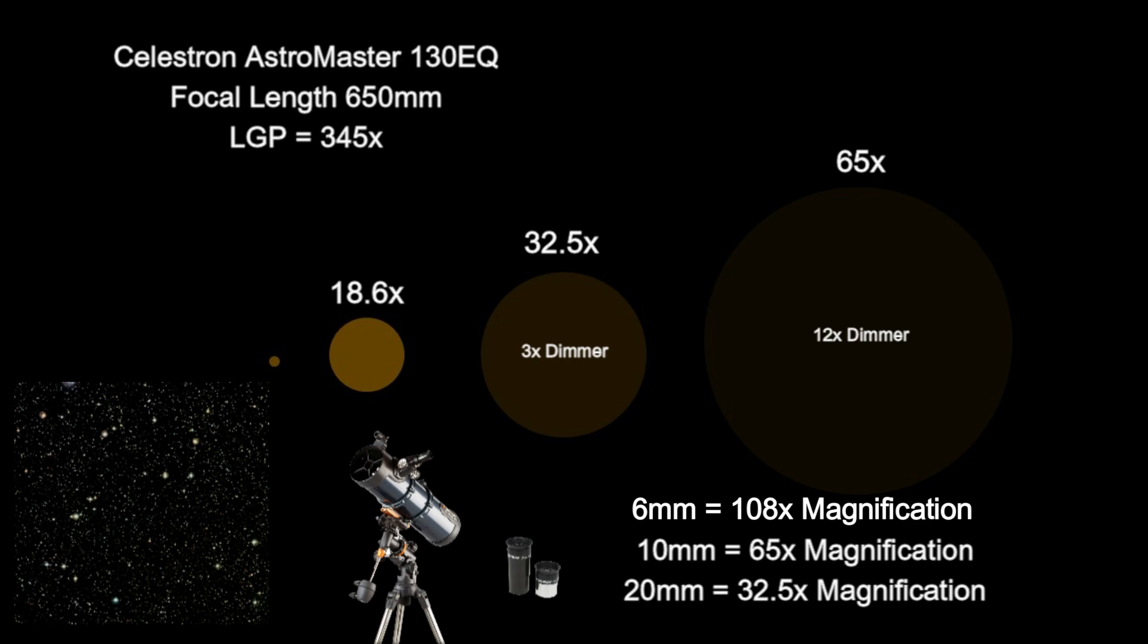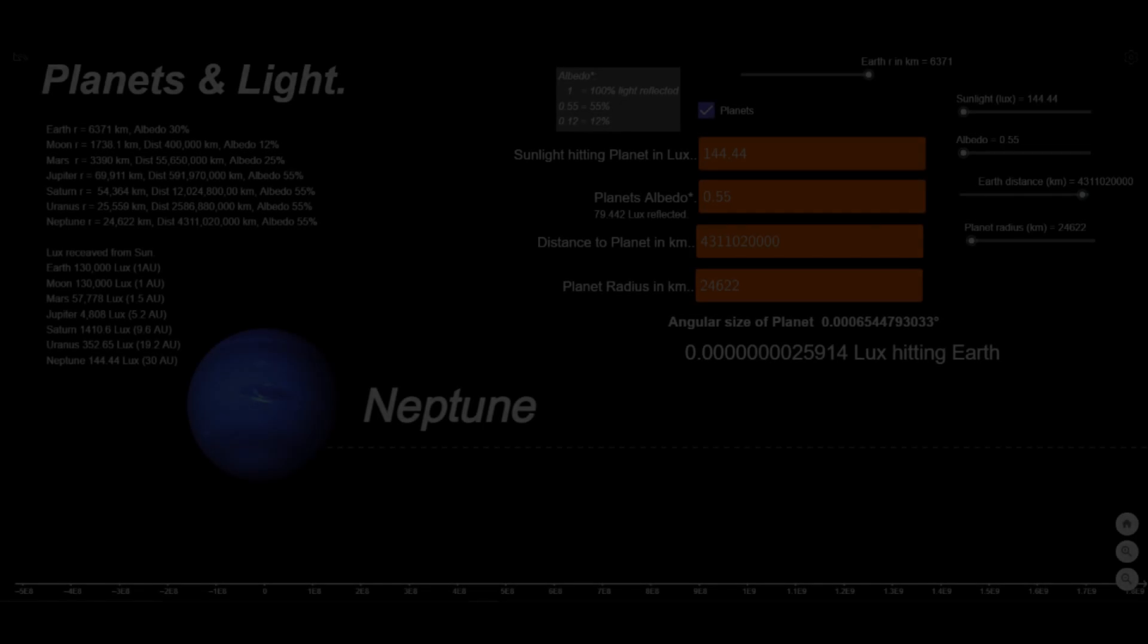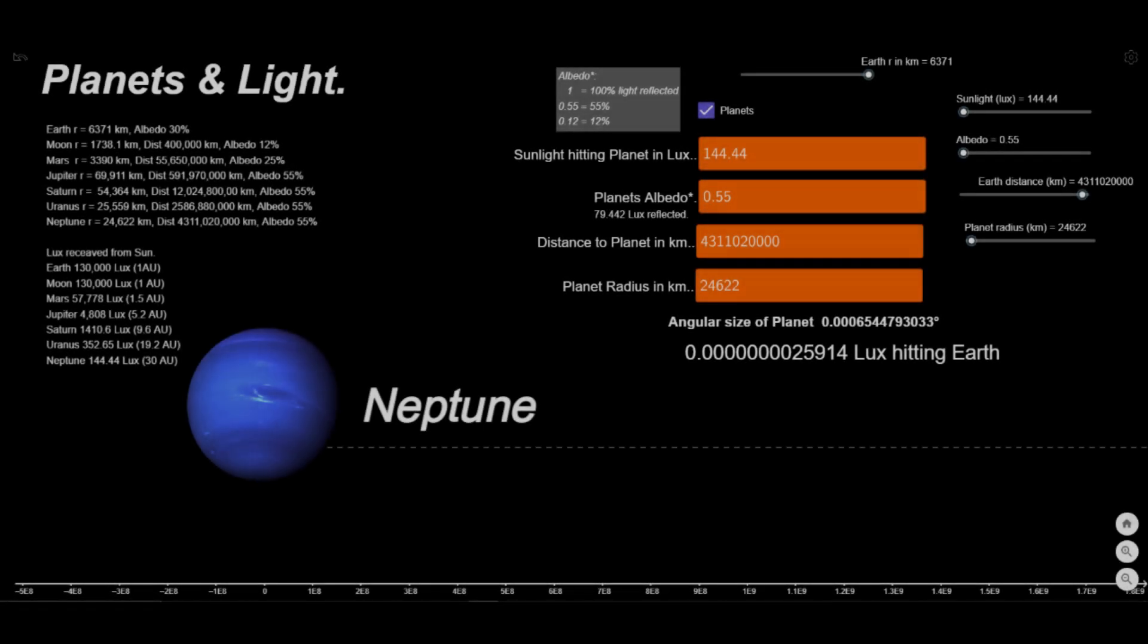Higher magnifications spread light over more rods and cones, so each gets less light. Telescopes actually prove planets are close.